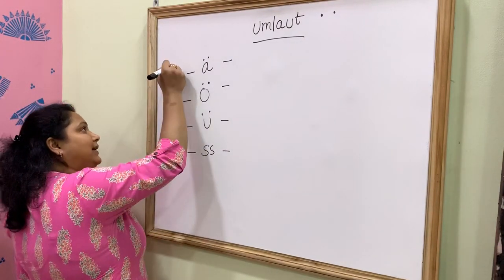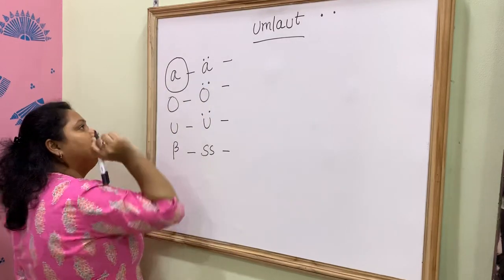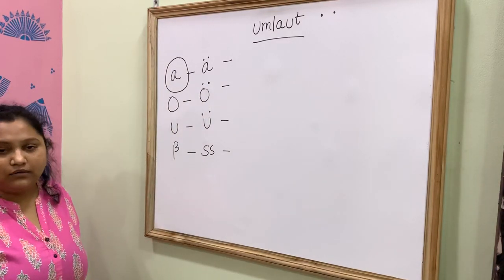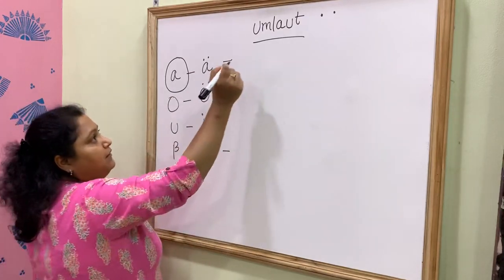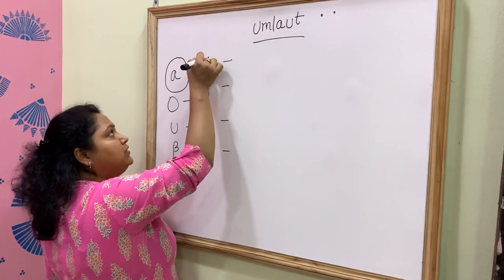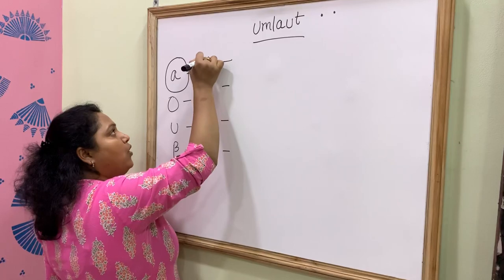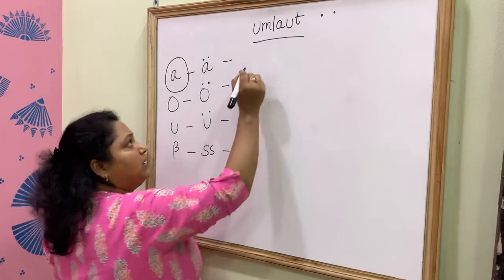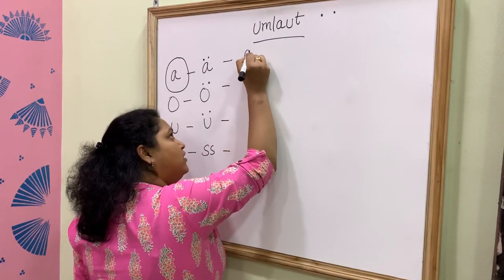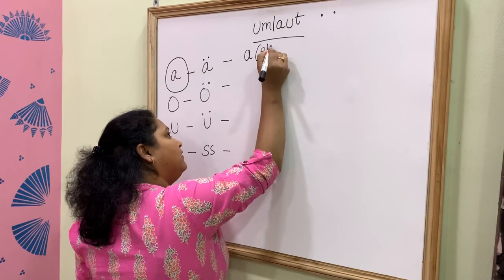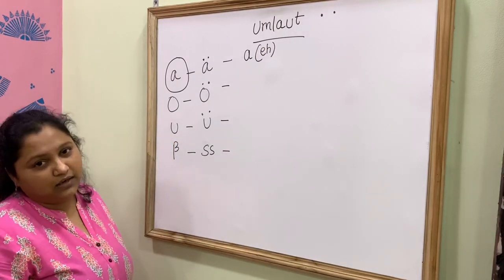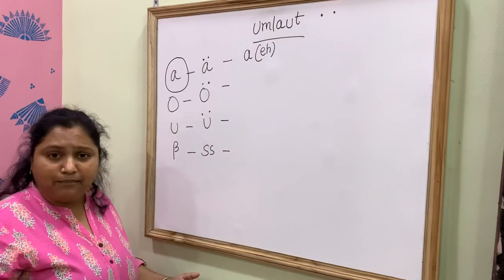That day when we were discussing this, this was A. But whenever we put the Umlaut sign on A, this becomes Ä - normal A, the way we pronounce it in English, A as in A for Apple.